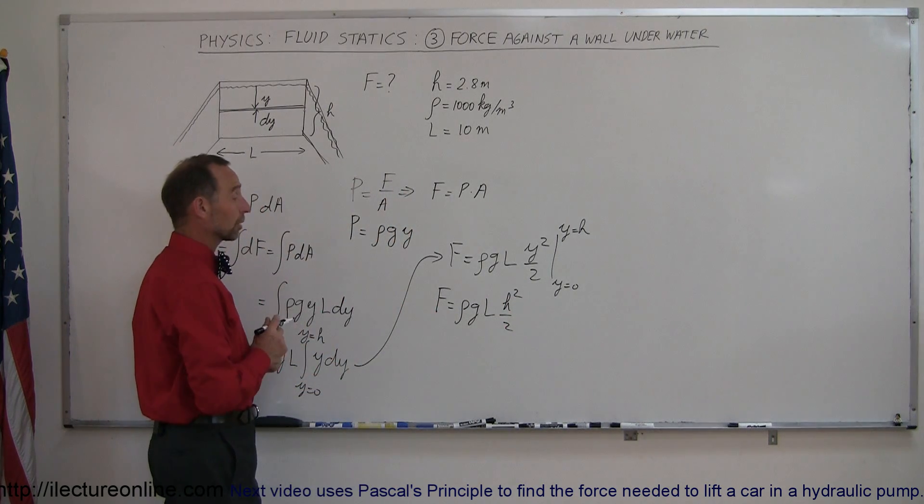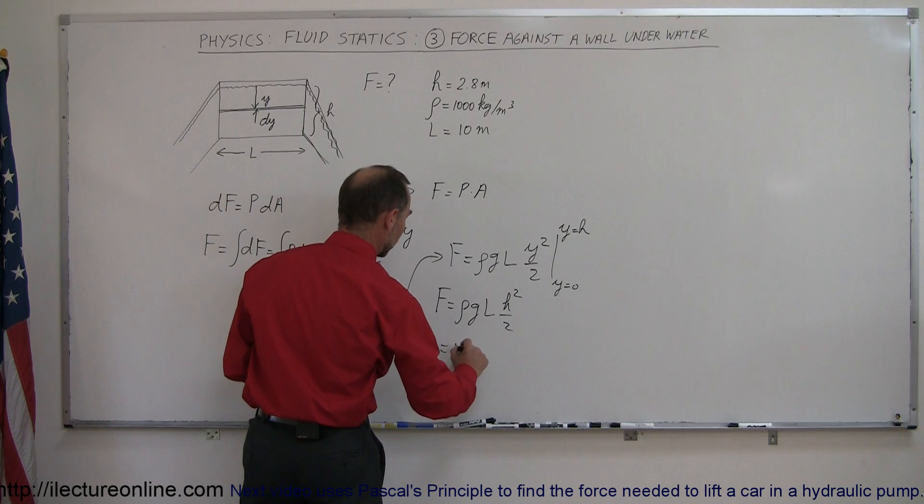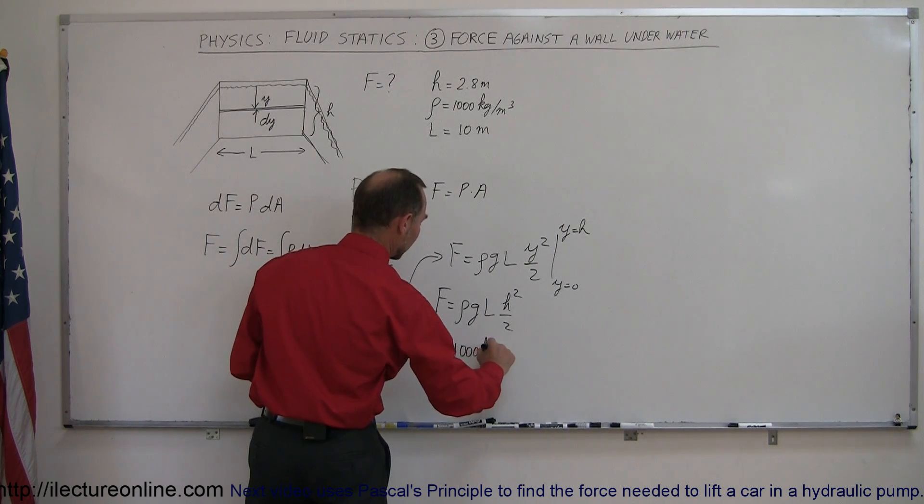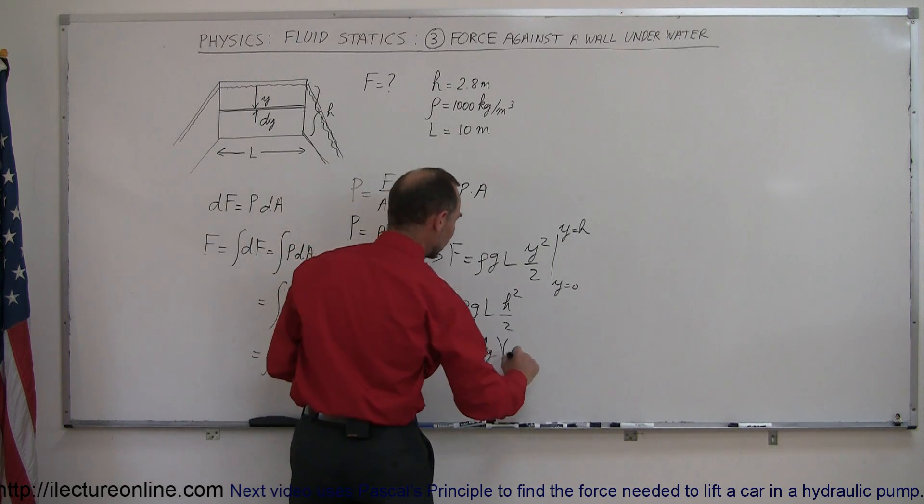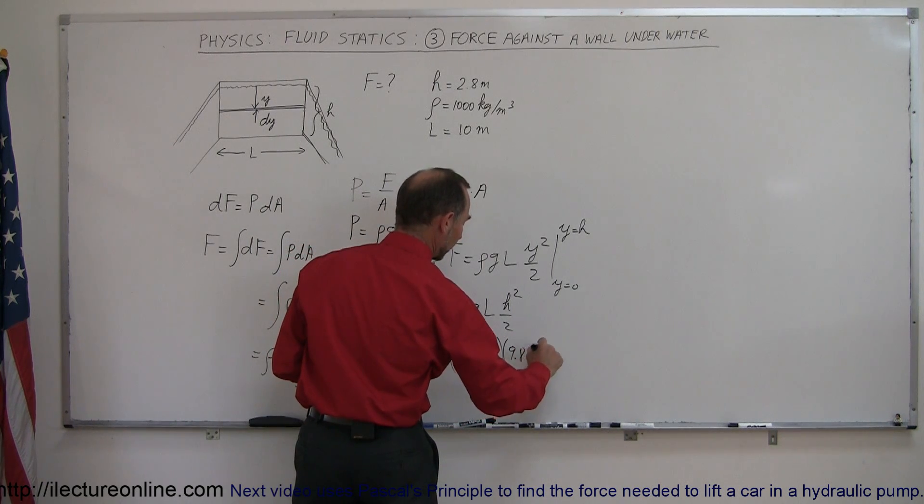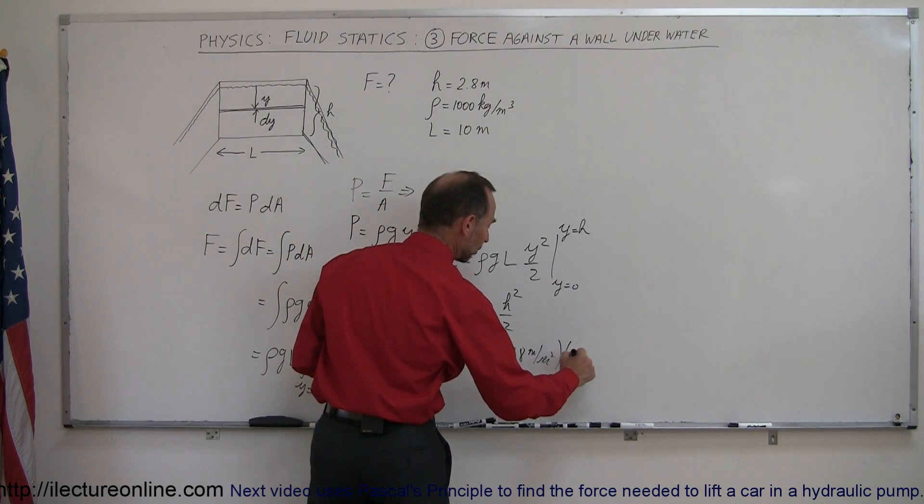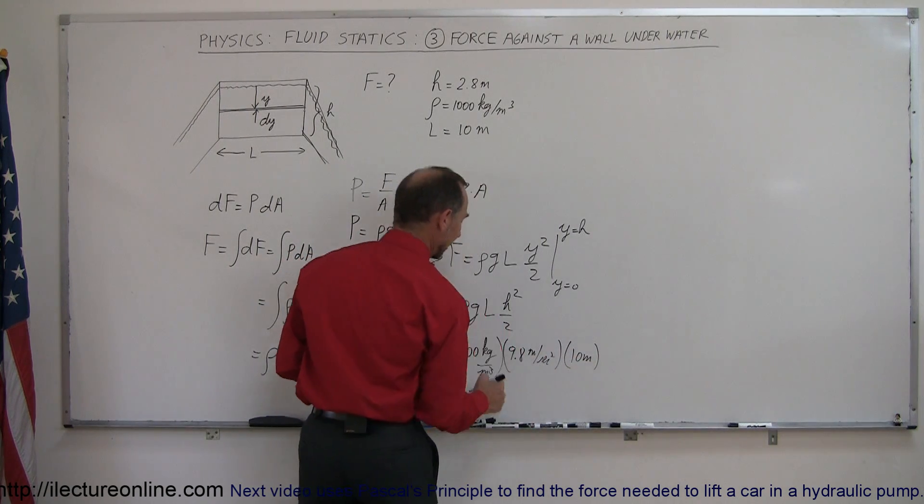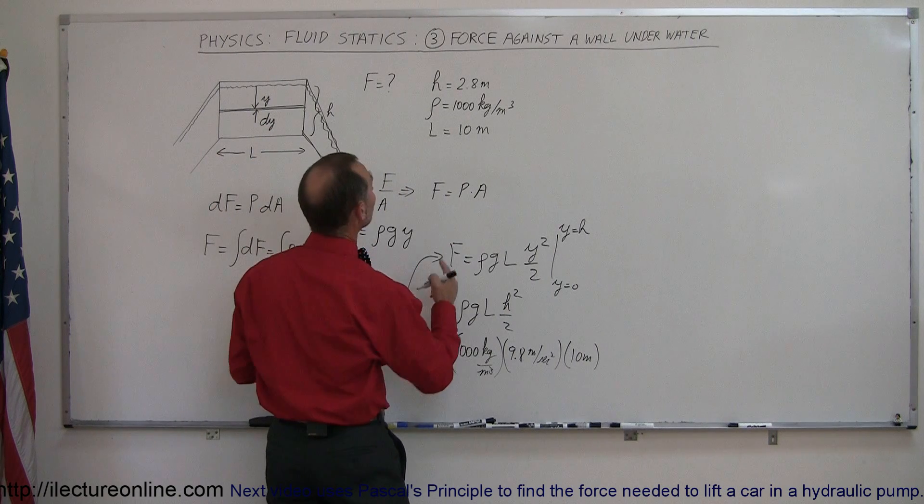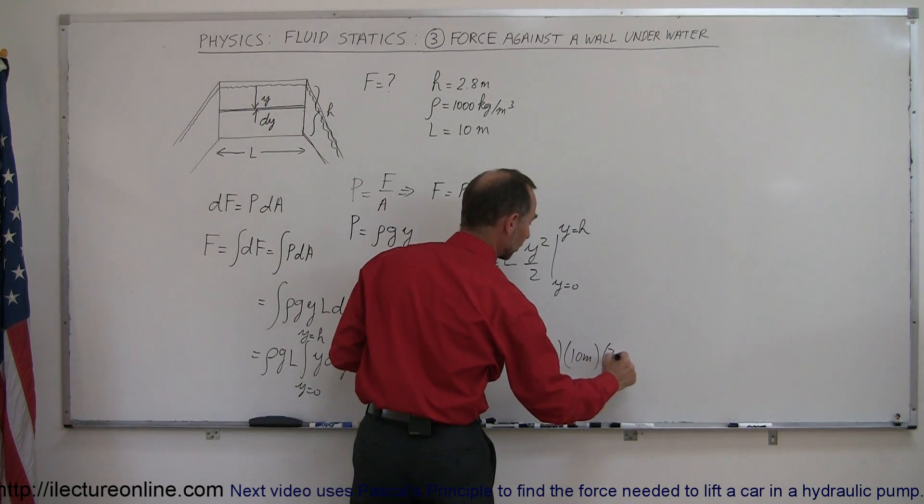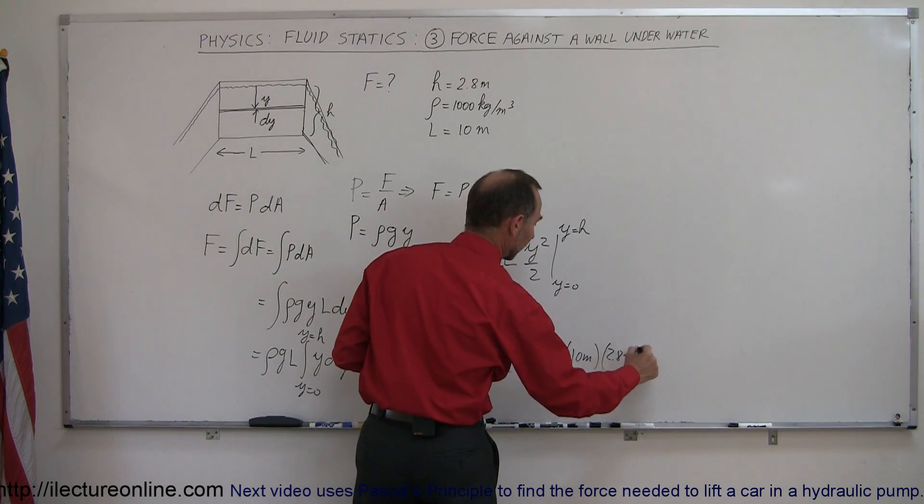And then plug in the numbers, you want a numerical value. The density is equal to 1,000 kilograms per cubic meter, g is equal to 9.8 meters per second squared, L is the length of that wall which is 10 meters, h was the depth of the pool which we said was 2.8 meters.